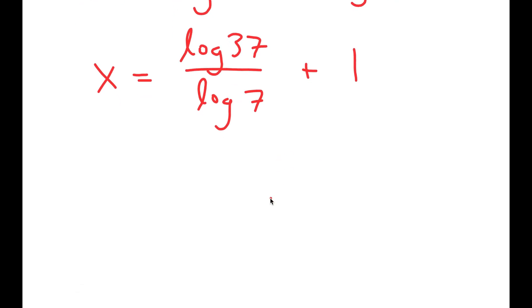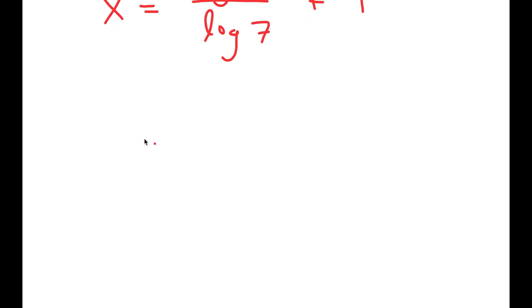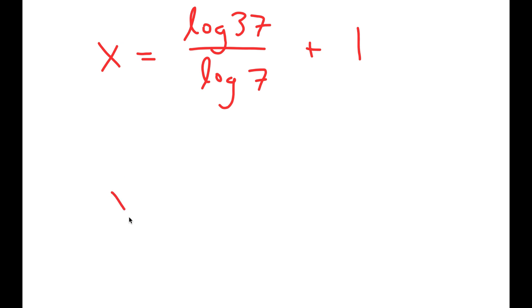And now, the final thing to do is to plug in the actual values of log 37 and log 7. So log of 37 is 1.568, and log of 7 is equal to 0.845.